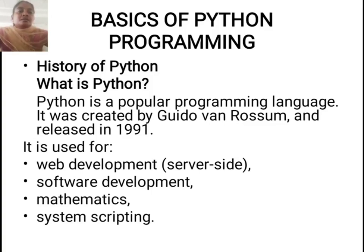The history of Python. What is Python? Python is a popular programming language. It was created by Guido Van Rossum and released in 1991. It is used for web development, server-side, software development, mathematics, and system scripting.